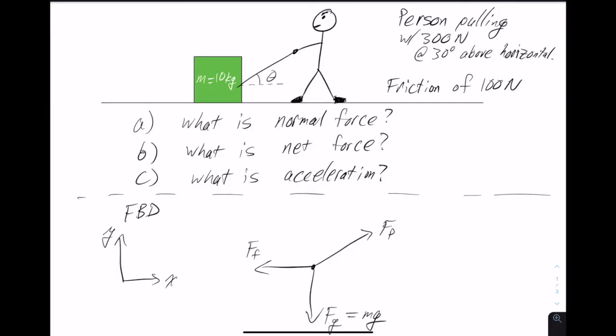Those were all the forces named in the problem, but there's a hint in the first question asking about the normal force. Because the box is resting on a surface, we don't have to be told there's a normal force — it's going to be there. The normal force always points perpendicular to the surface, so in this case it points upward.